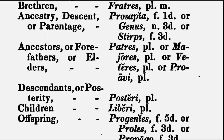Ancestry or parentage: prosapia, feminine — prosapia. Genus, neuter — genus. Or stirps — stirps. Heike stirps, heike prosapia, hoc genus.